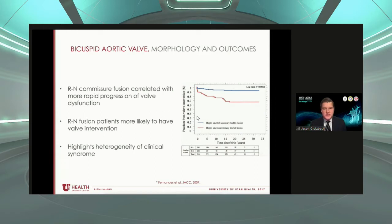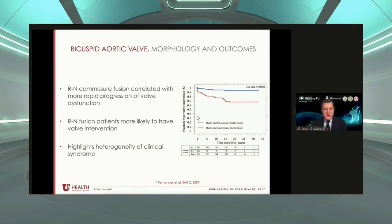This is not just an anatomic difference — these can be functional and have influence on outcomes. This is a study looking at fusion of the right and non-commissure valve versus the right and left. The right non-fusion patients in the red line have a significantly increased rate of intervention and significantly different outcomes. So not only do we have anatomic heterogeneity, we have clinical outcome heterogeneity. Once someone has a diagnosis of bicuspid, it's not sufficient just to say bicuspid valve — you really have to understand the morphology.